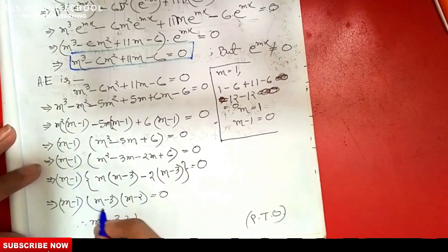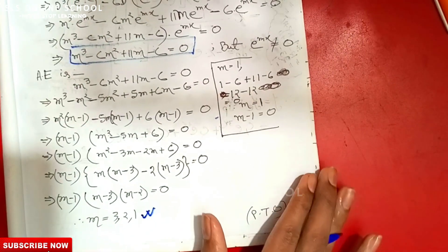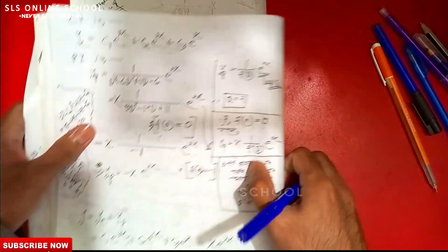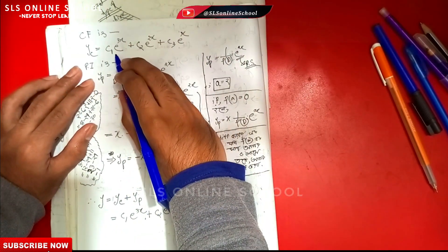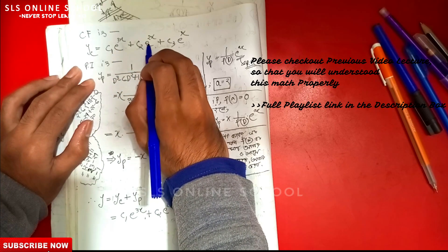After further calculation, the m values are found. The complementary solution yc is equal to c₁ · e^(3x) + c₂ · e^(2x) + c₃ · e^x.